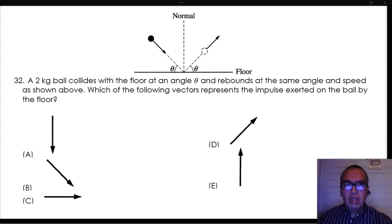A 2 kg ball collides with the floor at an angle theta and rebounds at the same angle and speed as shown above.